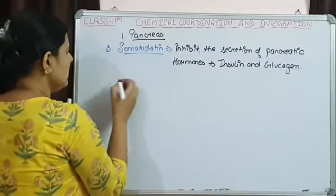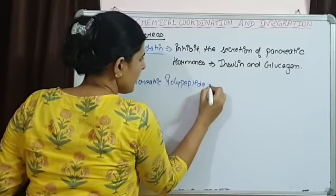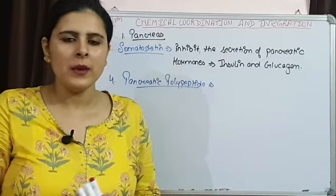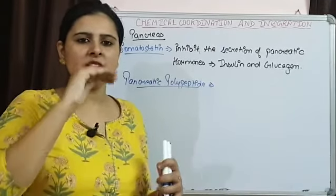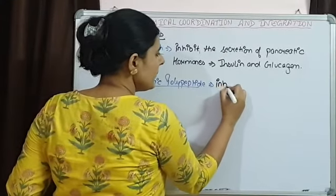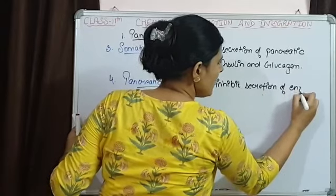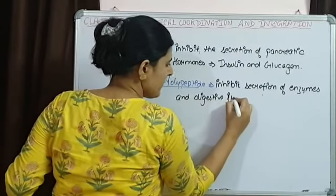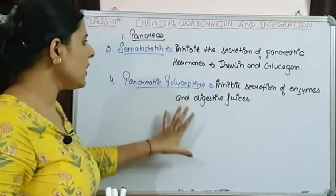The next hormone is pancreatic polypeptide, which also acts as an inhibitory hormone. It inhibits the exocrine part of pancreas — specifically, it inhibits the secretion of enzymes and digestive juices from pancreas. So it acts as an inhibitory hormone on the exocrine part. These are the four hormones and their functions released by pancreas.